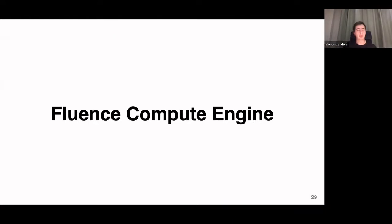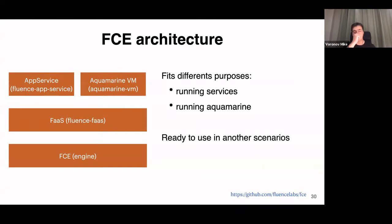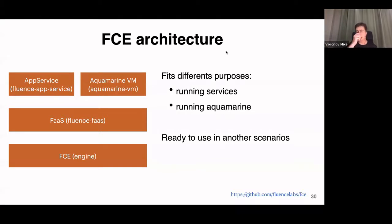Fluence Compute Engine consists of several layers — three layers for different purposes. The first purpose is running application services, which consist of several WebAssembly modules — called AppService. The second goal is running Aquamarine, which has a separate runner called Aquamarine VM. We also believe the scheme can be used in other scenarios, for example in any plugin system — in games or in complex software where modules should encapsulate their state.